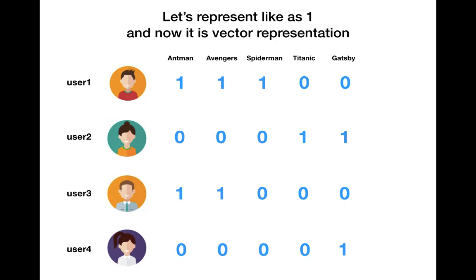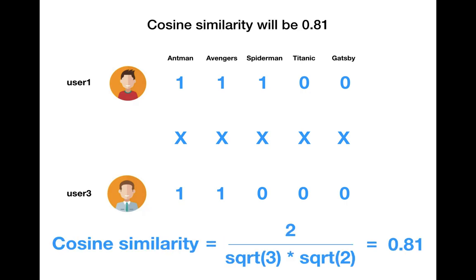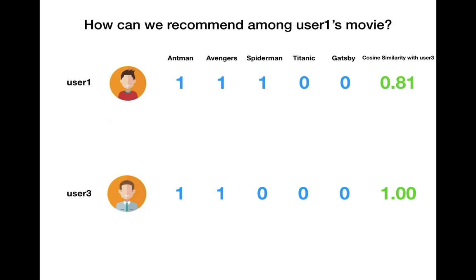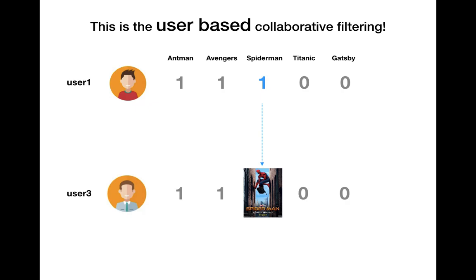Since it's a vector representation, we can use a similarity algorithm. I'm going to use cosine similarity. If you calculate the cosine similarity for every user, the similarity between user 3 and user 1 is the highest value. That means user 1 has a very similar movie taste to user 3. So we can recommend movies from user 1 — they both watched Ant-Man and Avengers, but user 1 also watched Spider-Man, so we recommend Spider-Man to user 3. This is user-based collaborative filtering.